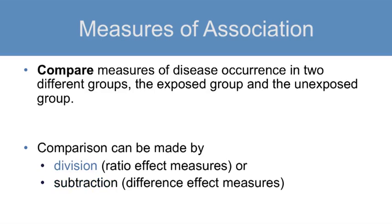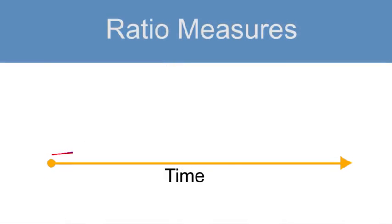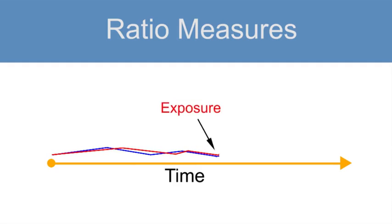For the division approach, you are comparing relative measures of an effect. One key question for these ratio measures is what group you are comparing relative to which other group — for example, exposed versus unexposed, or one population versus another. For difference measures, in which you use subtraction, you are comparing absolute differences in effect. In the following segments, we will discuss each ratio and difference measure in more detail.